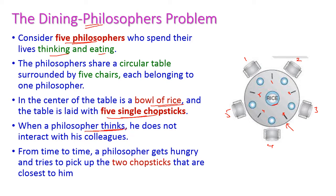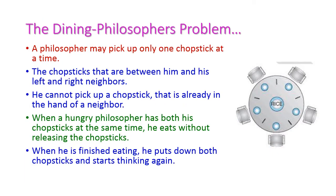When a philosopher thinks, he does not interact with his colleagues. From time to time, the philosopher gets hungry and tries to pick 2 chopsticks that are closer to him. If he wants to eat the rice, then this particular philosopher has to pick these 2 chopsticks — only the chopsticks closer to him. A philosopher may pick only one chopstick at a time, but the chopstick is placed between the philosopher and his neighbour. If the chopstick is held by another philosopher, then he cannot take it, so he has to wait.